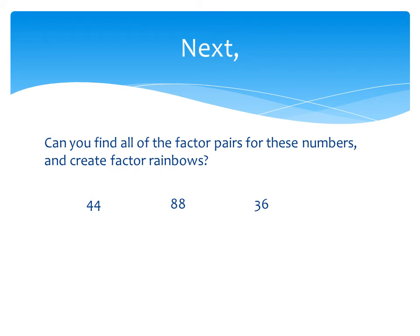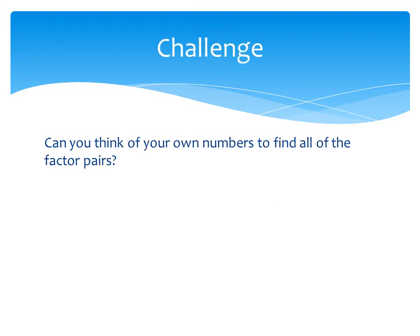Now see how many factor pairs you can find for these numbers: 44, 88, 36. Can you make factor rainbows from these numbers?